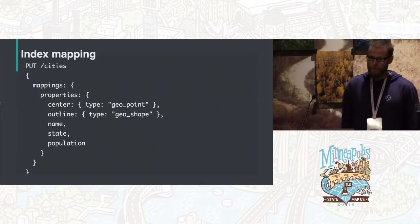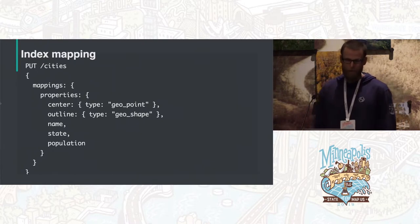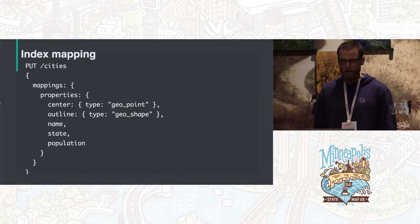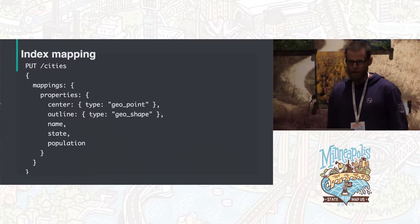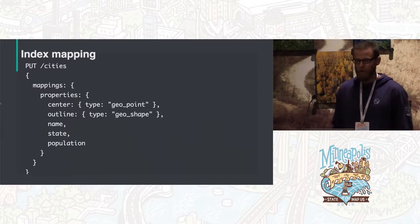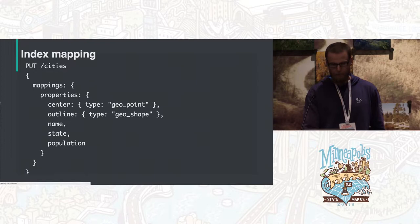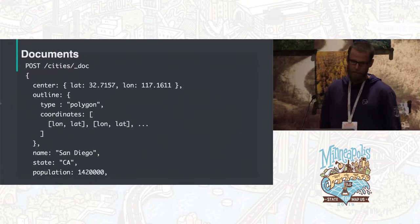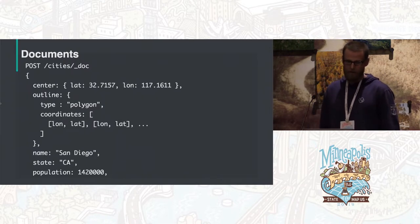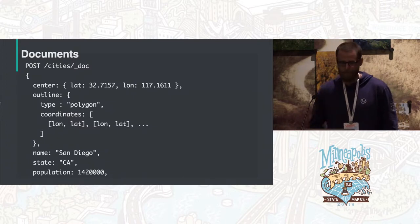Elasticsearch stores documents. When setting up your index, you need to tell Elasticsearch how you want each field to be indexed. In this example, I'm showing how to index some geospatial information. I'm setting up a cities index with some metadata — notably a center field indexed as a geopoint and an outline indexed as a geoshape. Once the index is set up, I can start putting documents in via HTTP POST, with center as latitude/longitude and shapes as GeoJSON.